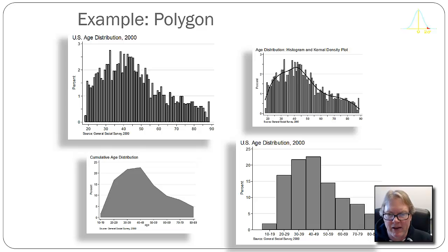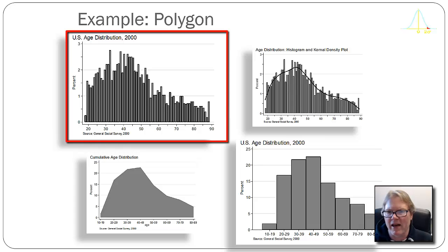Here's the distribution of age, and I'm going to use this to demonstrate frequency polygon. So on the upper left is this distribution of age, which I think is not a very good example of a graphic.